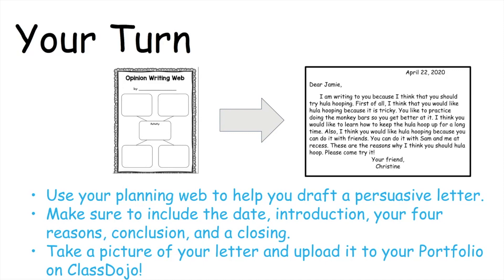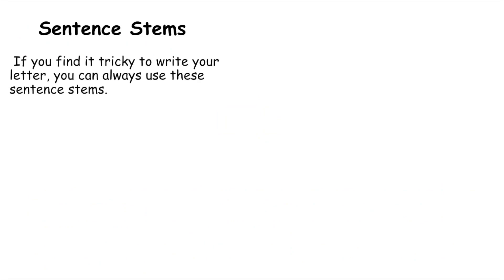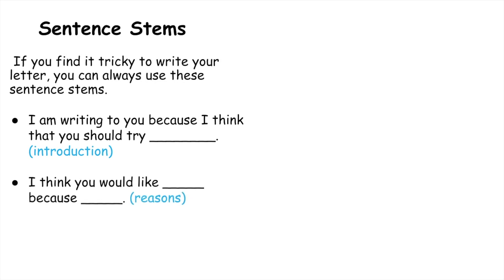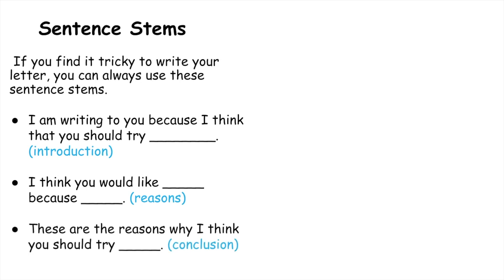Now, if writing the letter is a little tricky, I have some things that might help you. I have sentence stems. If you find it tricky to write your letter, you can always use these sentence stems. 'I am writing to you because I think that you should try ___' — this is good for your introduction sentence. 'I think that you would like ___ because ___' — this is for your reasons. You would write your activity in the first blank and then list a reason from your opinion writing web. And then you can write 'These are the reasons why I think you should try ___' — listing your activity here — and this sentence is good for your conclusion.